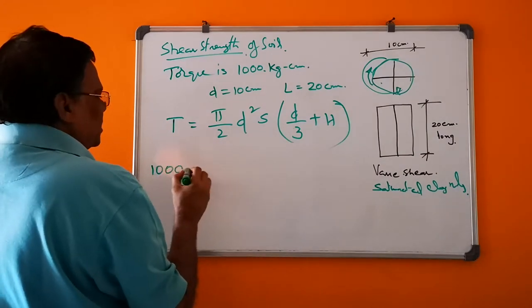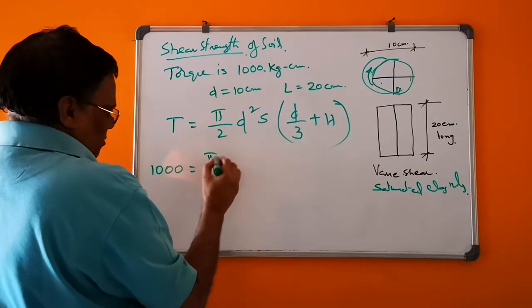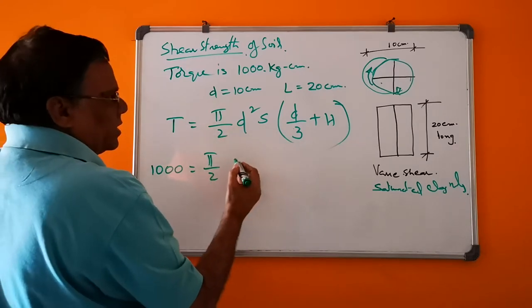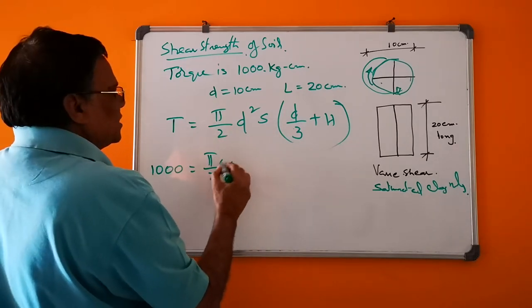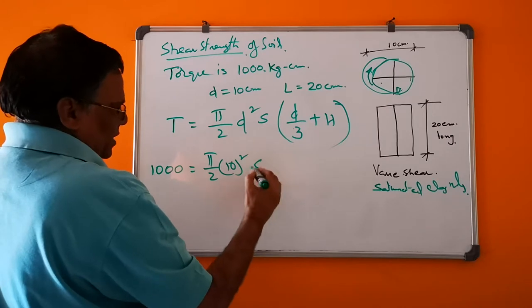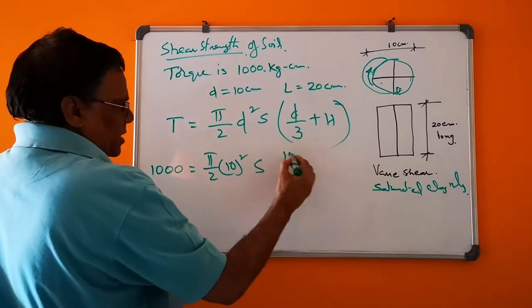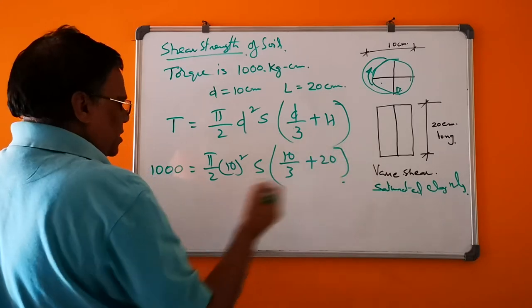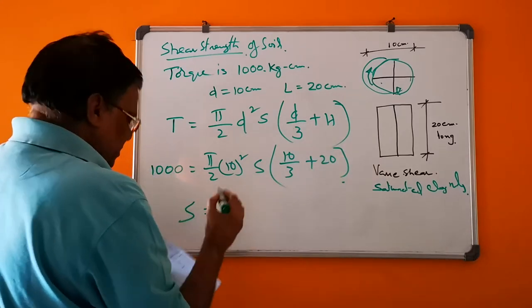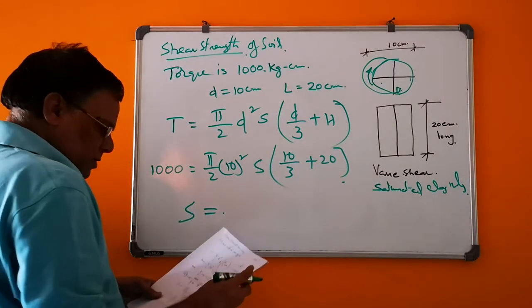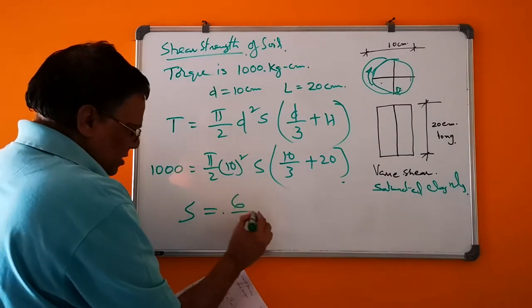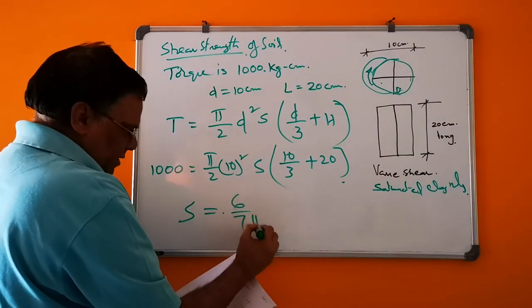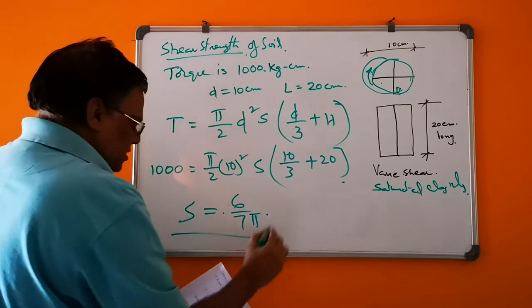Here, 1000 = π/2 × (10)² × S × (10/3 + 20). If you solve this, S = 6.75. This is the answer.